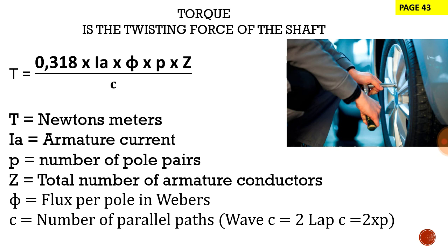Ia is the armature current. Small letter p is the number of pole pairs. Z is the total number of armature conductors.